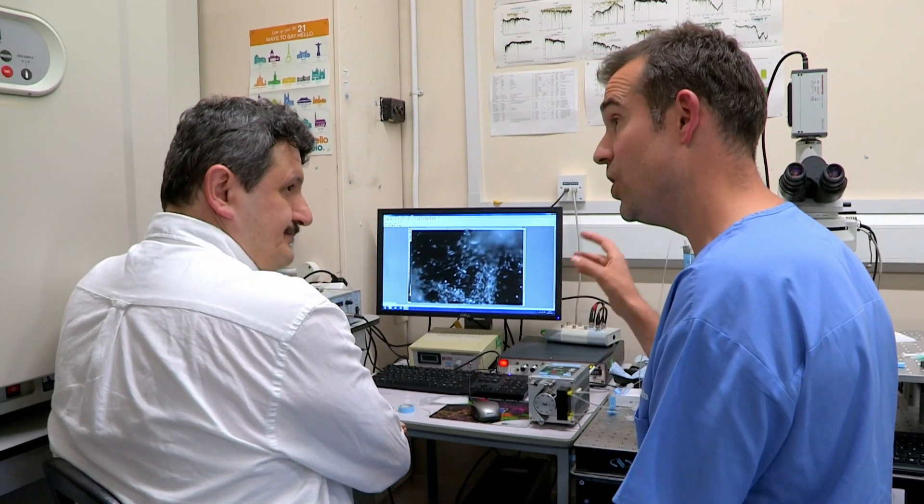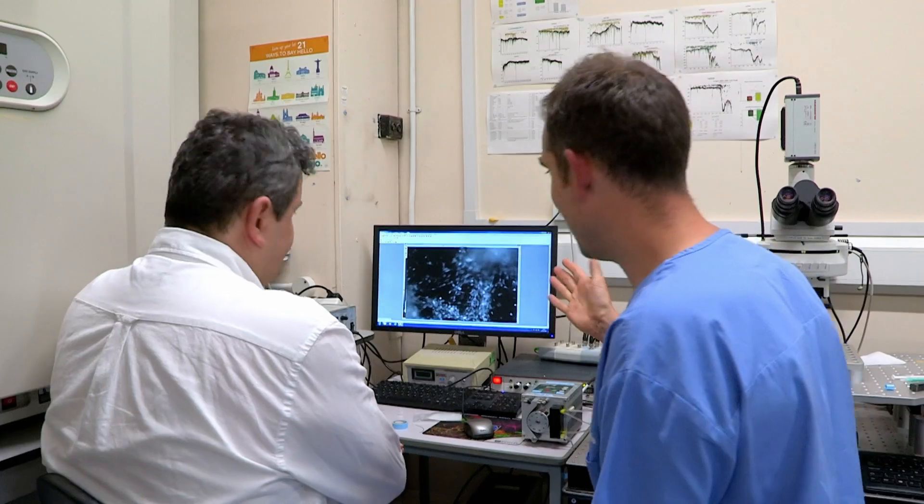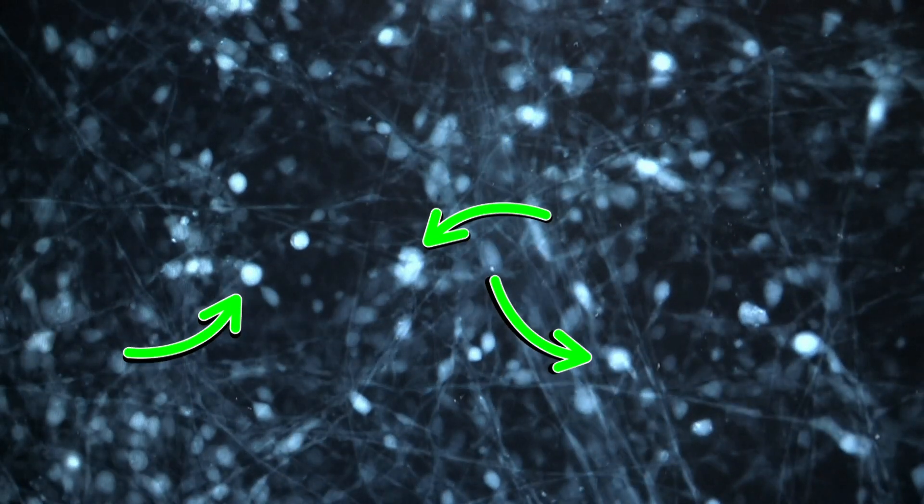Now we have neurons growing on a scaffold. And why are they flashing? Flashing shows that neurons start to connect to each other, just start to talk to each other. So these neurons, they're already forming a brain-like circuit. Yes. Wow!